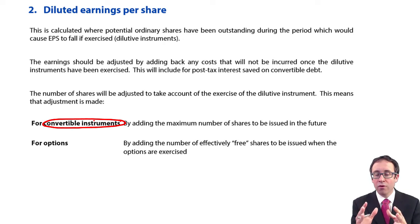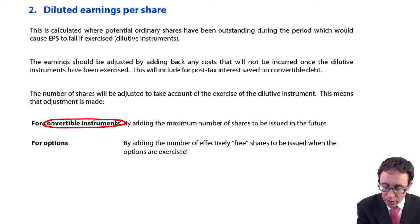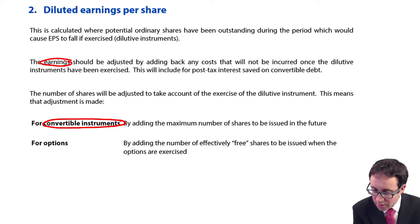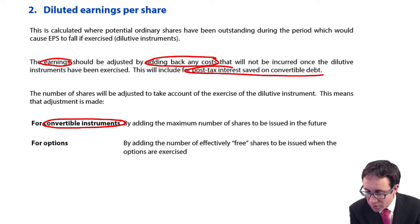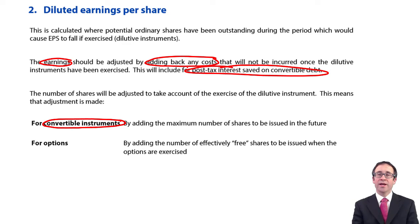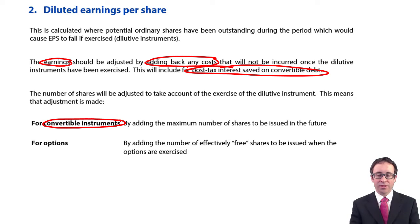We will need to look at any interest savings. Your earnings will be adjusted by adding back any costs that will be incurred once the instruments have been exercised — specifically, your post-tax interest on convertible debts. You need to look at the interest saved and therefore the extra tax that you will pay upon that saving, so the net interest after tax.